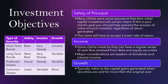In terms of investment objectives, there are three different things to consider. First is safety of principal — many clients want assurance that their initial capital investment will remain intact. If this is your client's goal, you should help prevent any loss regardless of the return generated. You may want to put them in a more secure investment, a segregated fund, or a market-linked GIC. If the client places high importance on safety of principal, they will have to accept a lower rate of return.